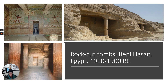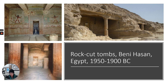Then the Hyksos — H-Y-K-S-O-S — invade and conquer Egypt in 1640 BC. They are of mixed Semitic and Asian descent, originating somewhere north of Palestine. They're driven out in 1532 BC. Then Ahmose I conquers and drives out all the Hyksos, who had formed the 15th and 16th dynasties of Egypt. Ahmose I's rule begins the New Kingdom, which will be the subject of the next lecture.